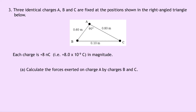Lastly, question three says that three identical charges A, B and C are fixed at the positions shown in a right angle triangle. Each charge is plus 8 nanocoulombs, i.e. plus 8 times 10 to the minus 9 coulombs in magnitude. Charge B is 0.6 metres from charge A, charge C is 0.8 metres from charge A, and B and C are separated by 0.1 metres. Part A says to calculate the forces exerted on charge A by charges B and C, so we need two separate calculations using Coulomb's inverse square law.